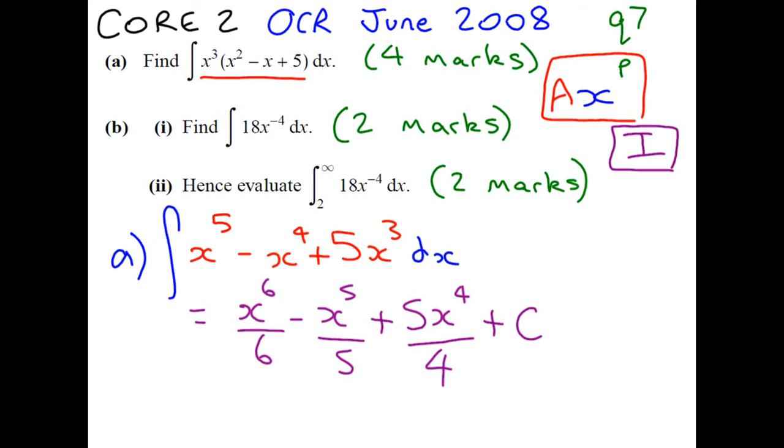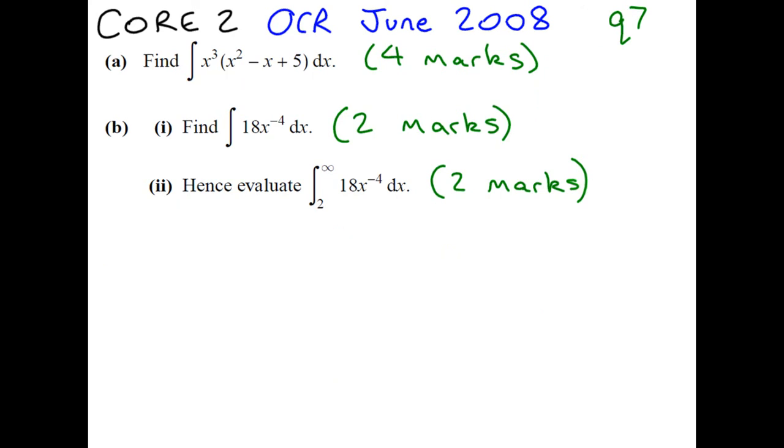Moving on to part b, we have to integrate 18x to minus 4 dx. It's exactly the same technique as we've just looked at. So we add 1 to the power. Now be careful, minus 4 plus 1 is minus 3.